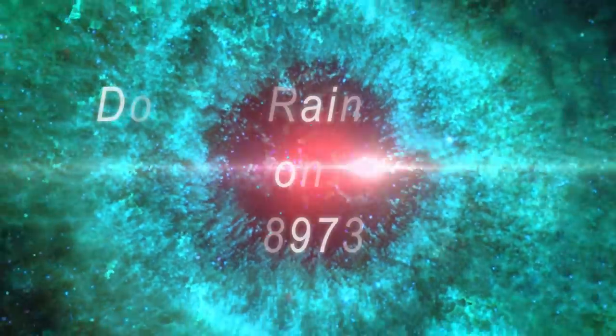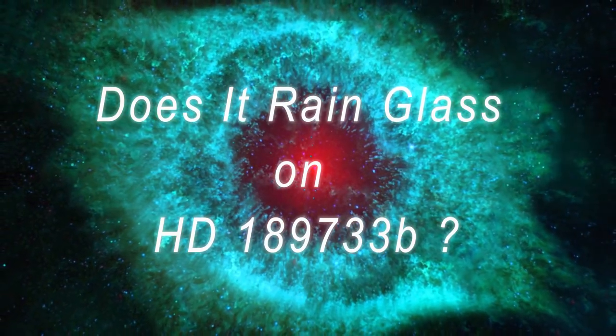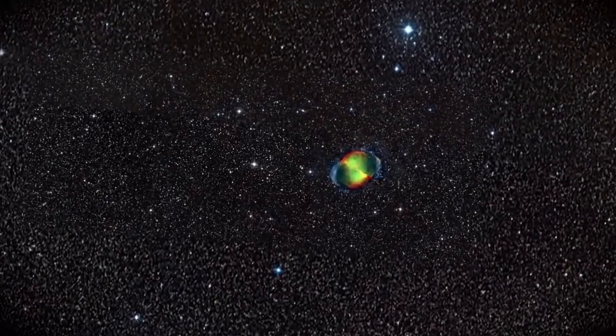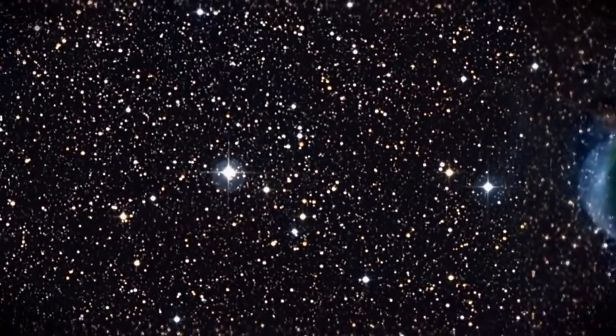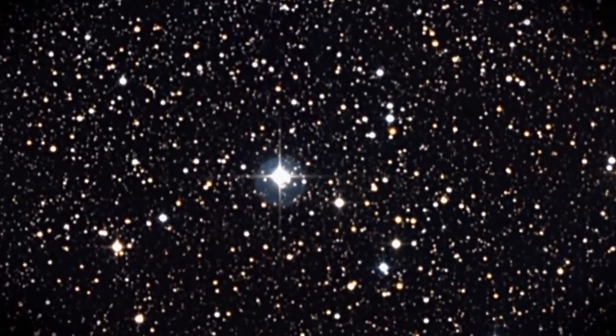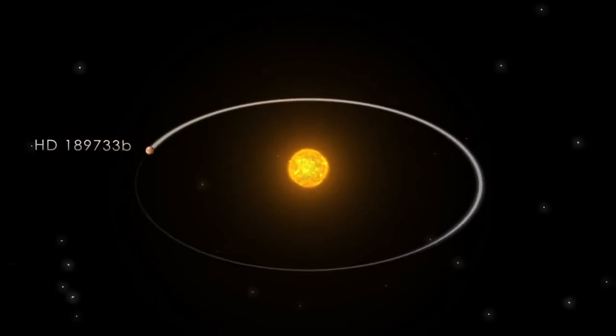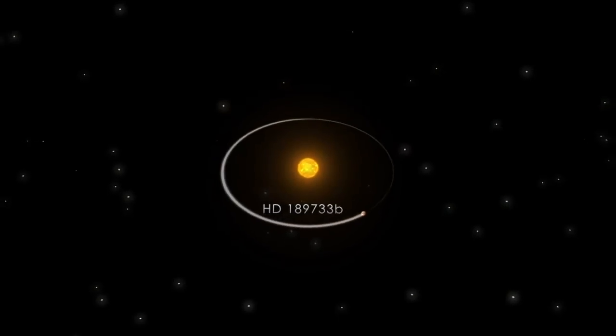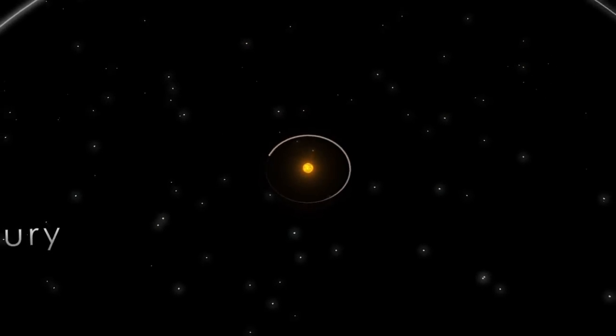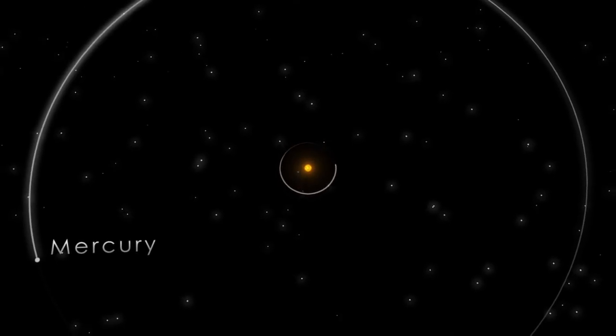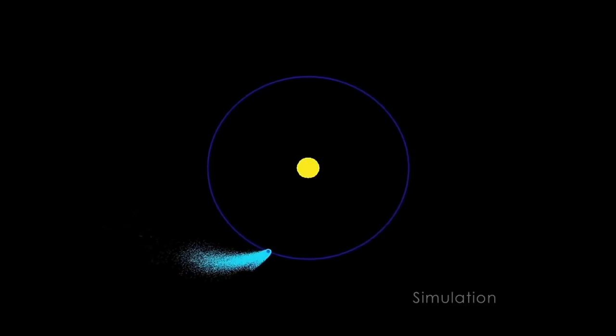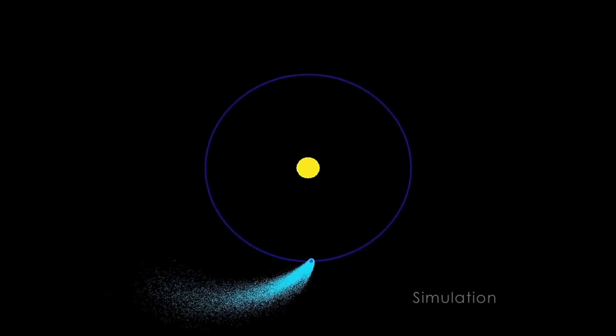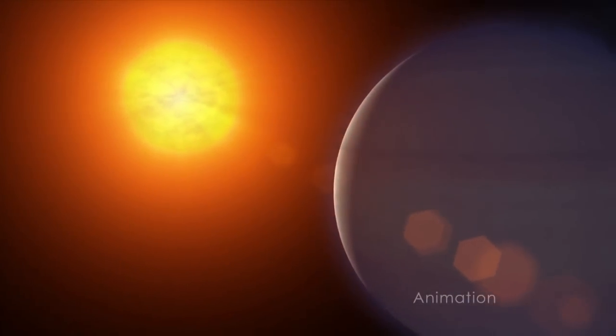Does it rain glass on HD 189733 b? HD 189733 b is an extrasolar planet approximately 63 light-years away from the solar system. With a mass 13 percent higher than that of Jupiter, HD 189733 b orbits its host star once every 2.2 days, making it a so-called Hot Jupiter. Hot Jupiters are a class of extrasolar planets whose characteristics are similar to Jupiter, but that have high surface temperatures because they orbit very close to their star.